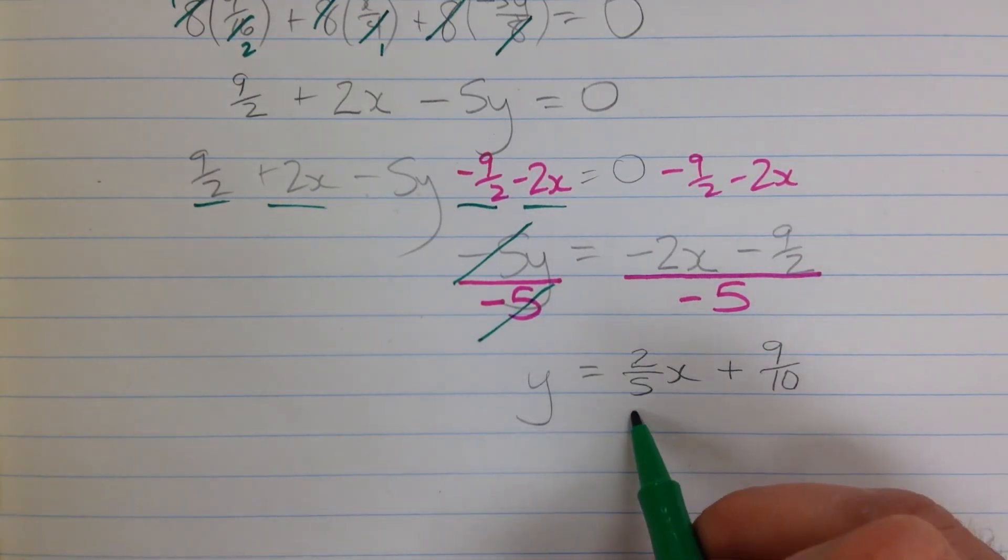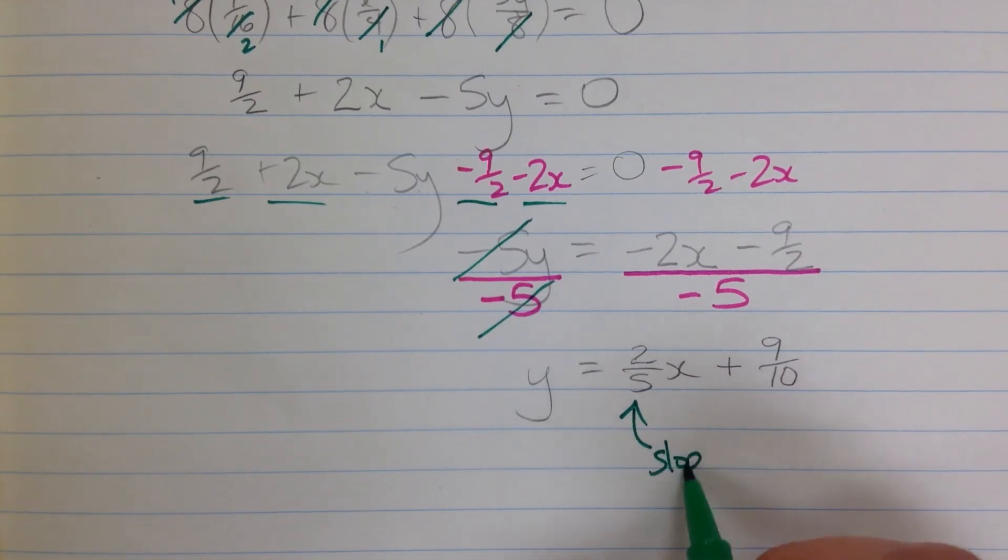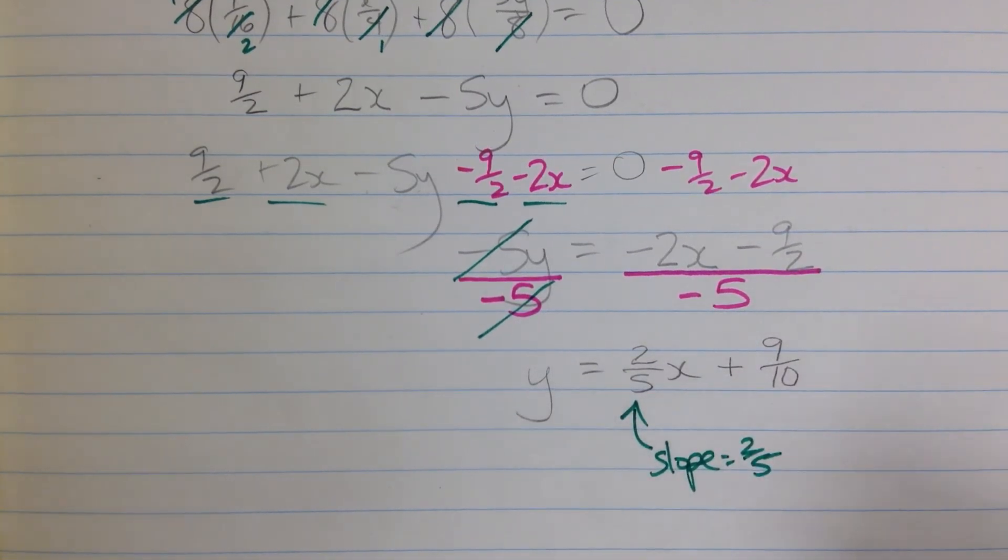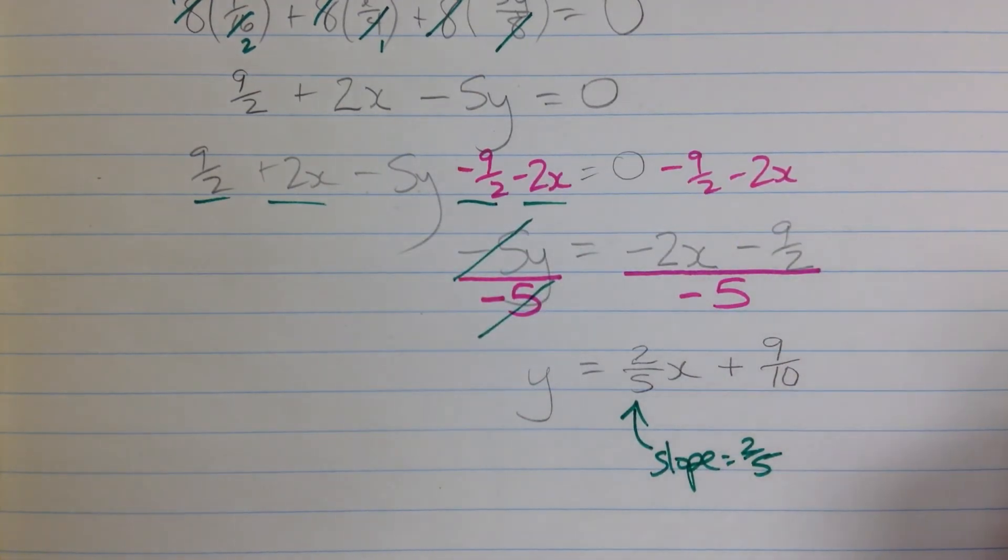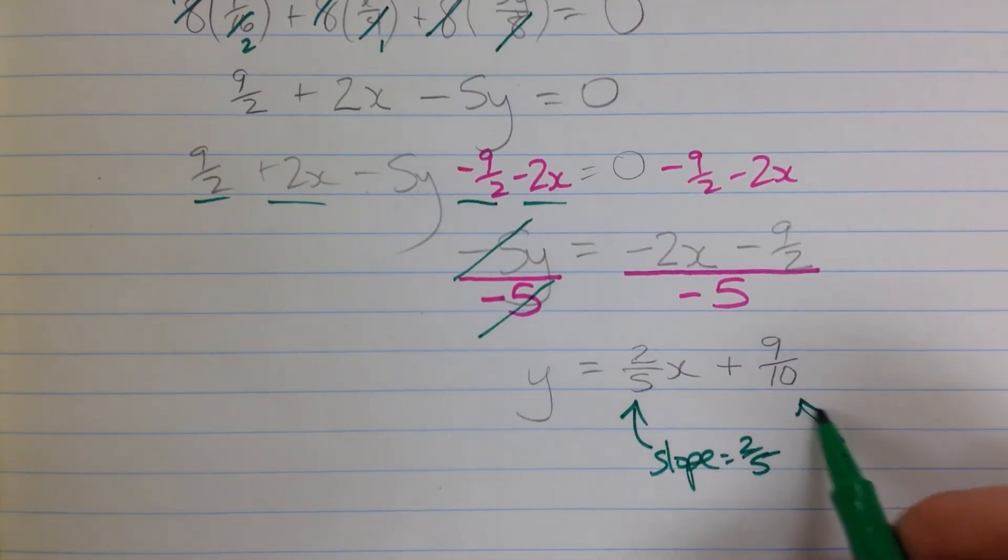And there, I'm finished. This is my slope, which is 2 fifths, positive 2 fifths, so that's an angle something like that, 2 up for every 5 over. And then here.